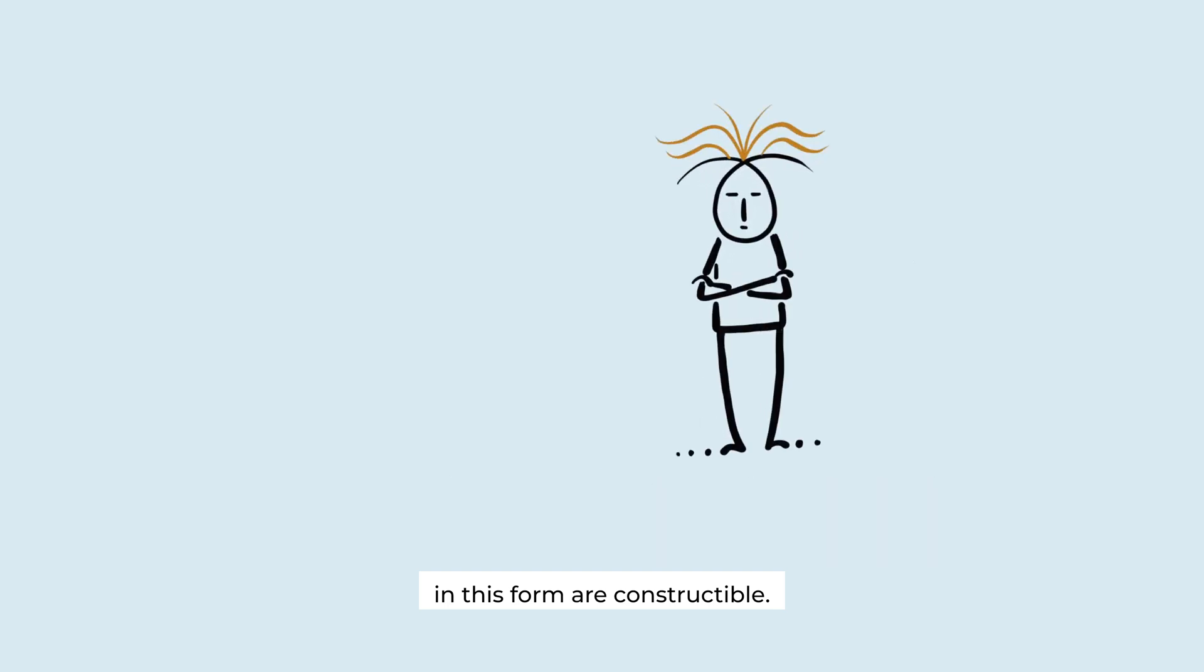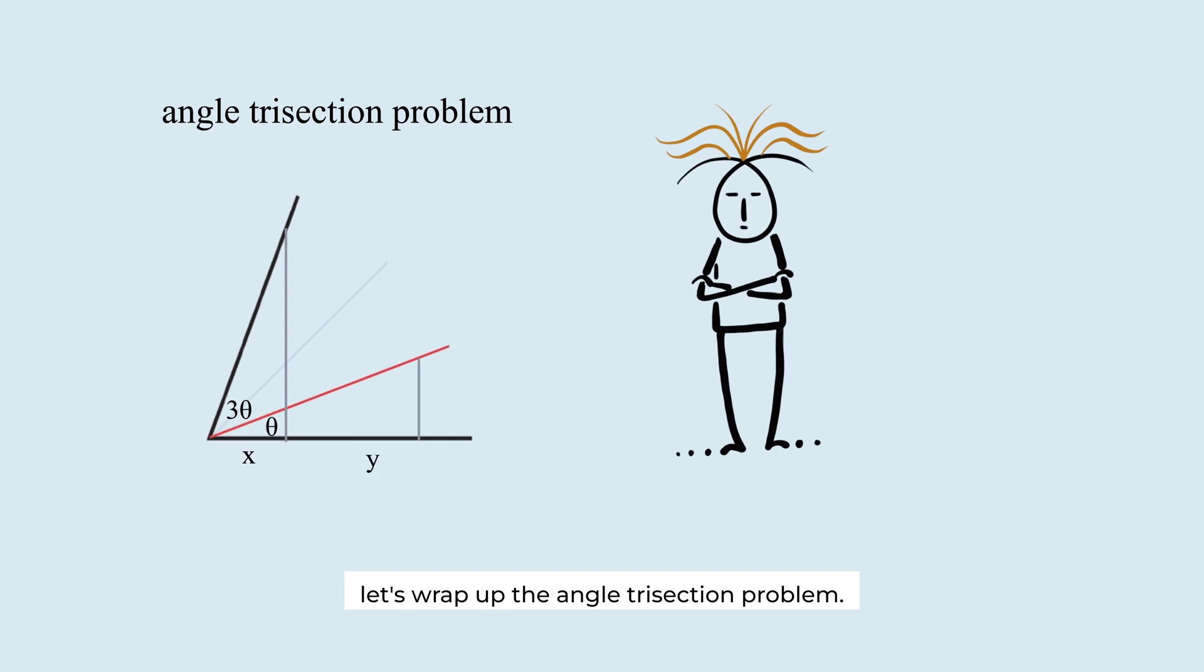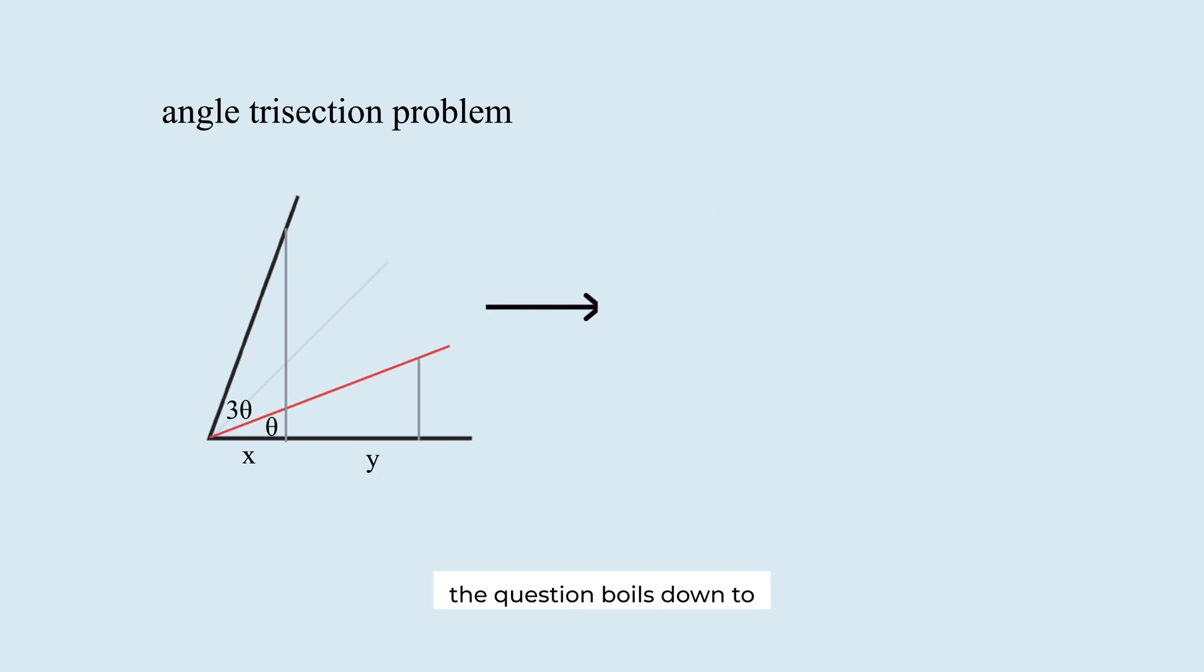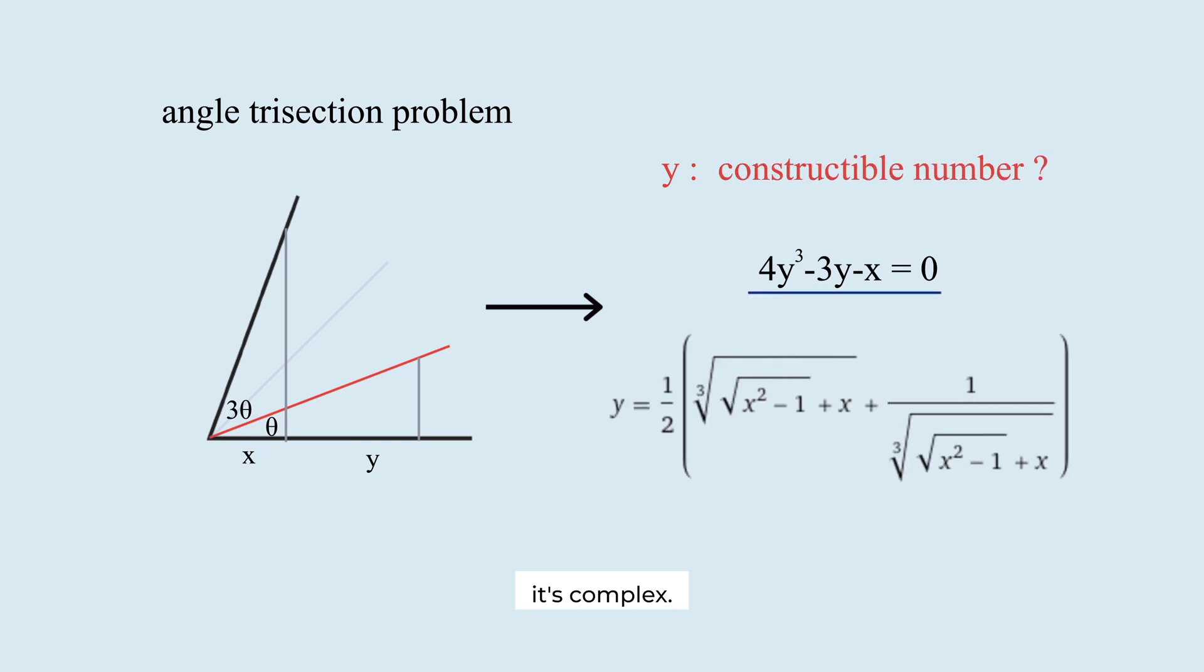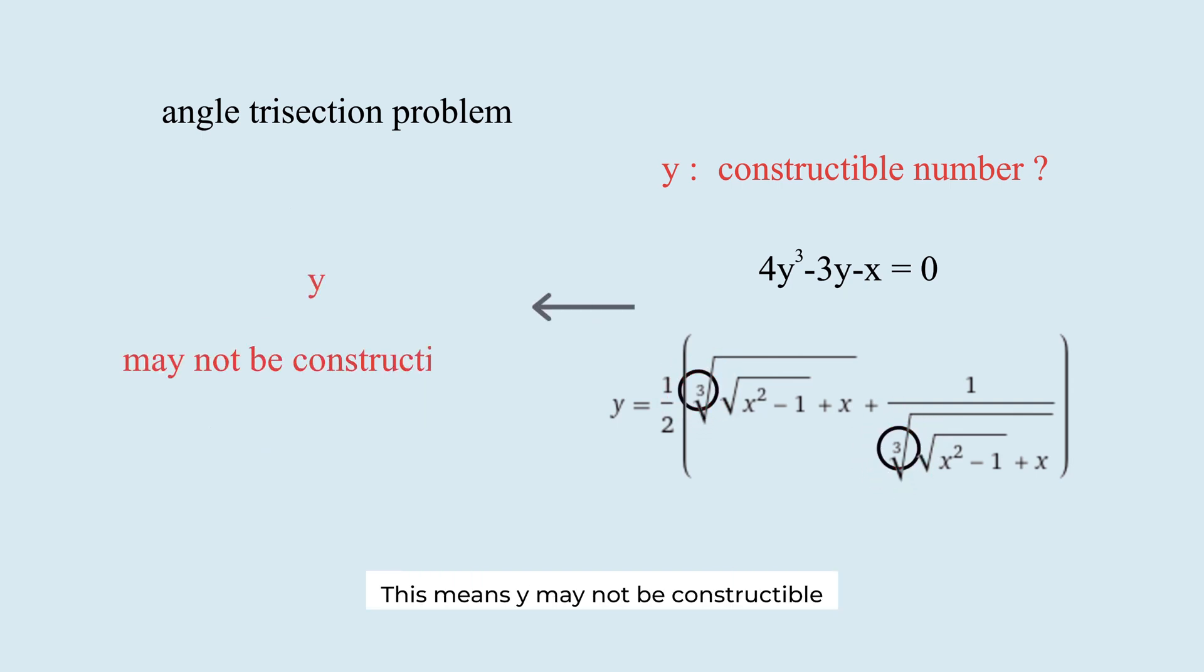Now, let's wrap up the angle-trisection problem. The question boils down to whether y, which satisfies this equation, is a constructive number. Solving the equation, y has this value. It's complex. But here's the key. A cube root appears. This means y may not be constructible for some values of x.